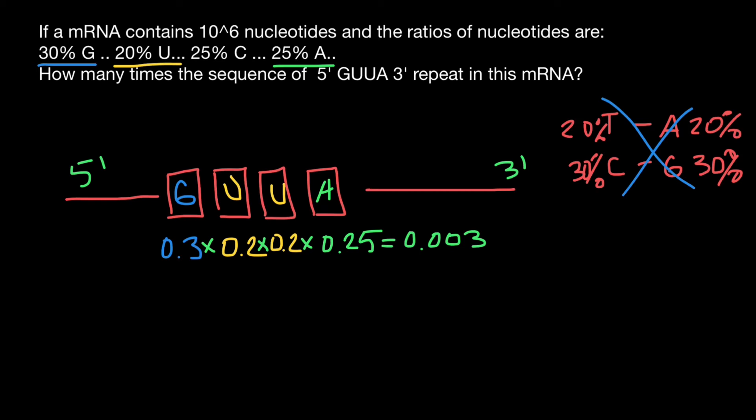And according to our problem, messenger RNA contains one million bases. That means that we have to multiply 0.003 by one million bases. This is the length of the messenger RNA. And our answer is going to be 3,000.